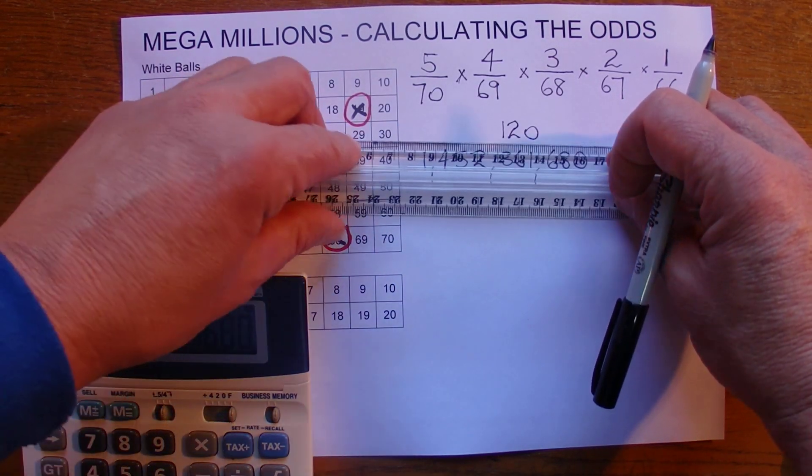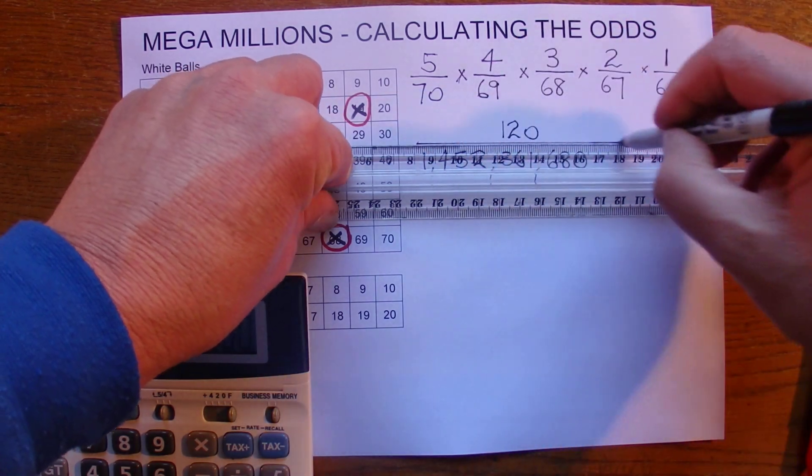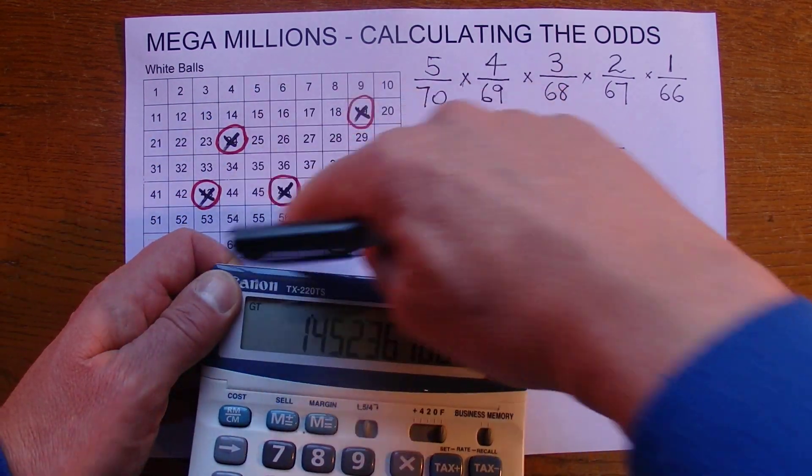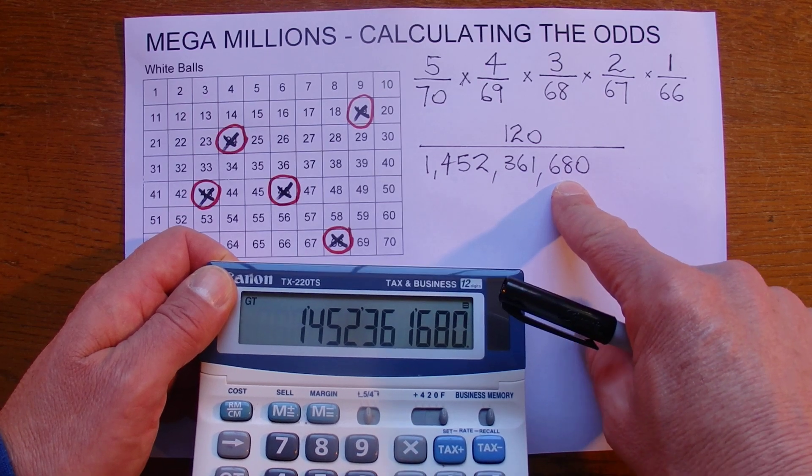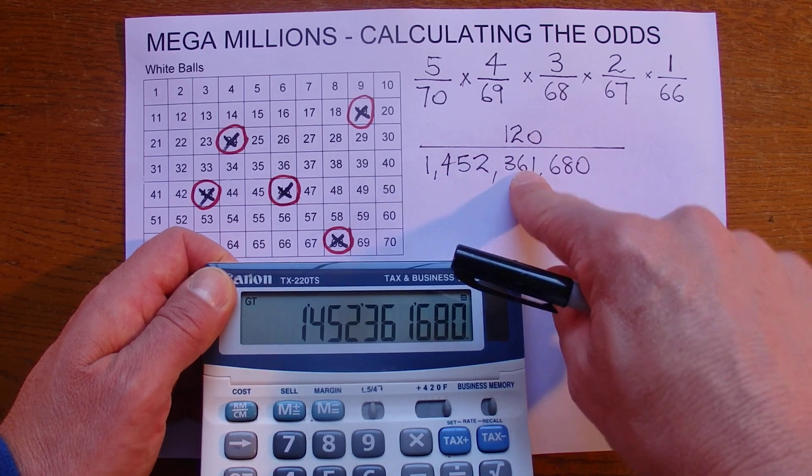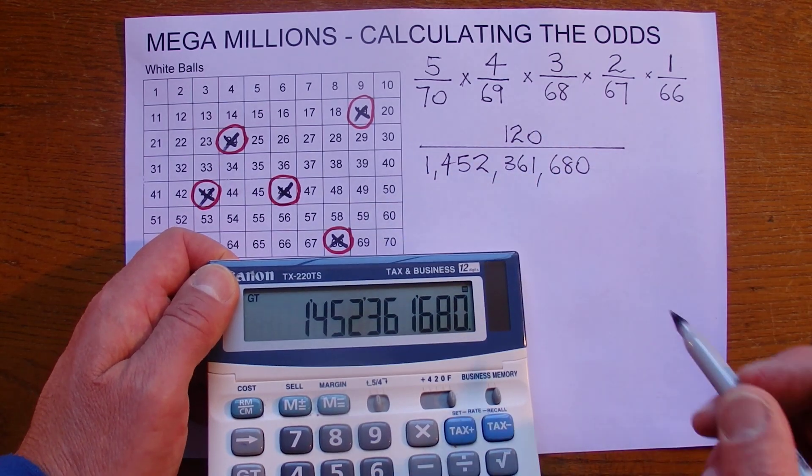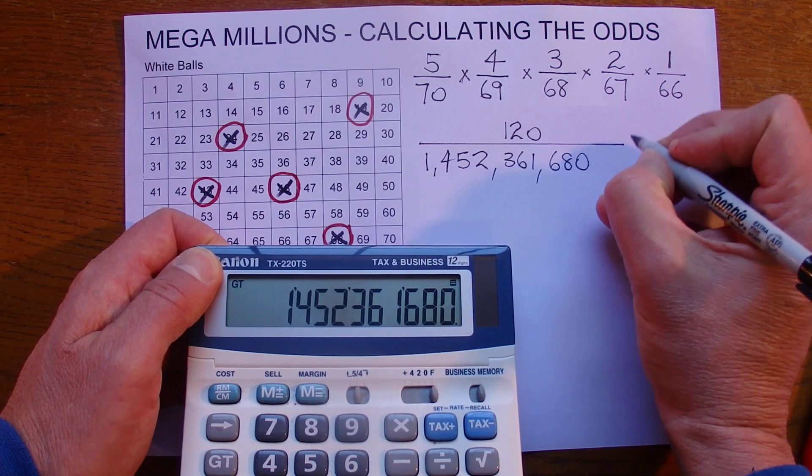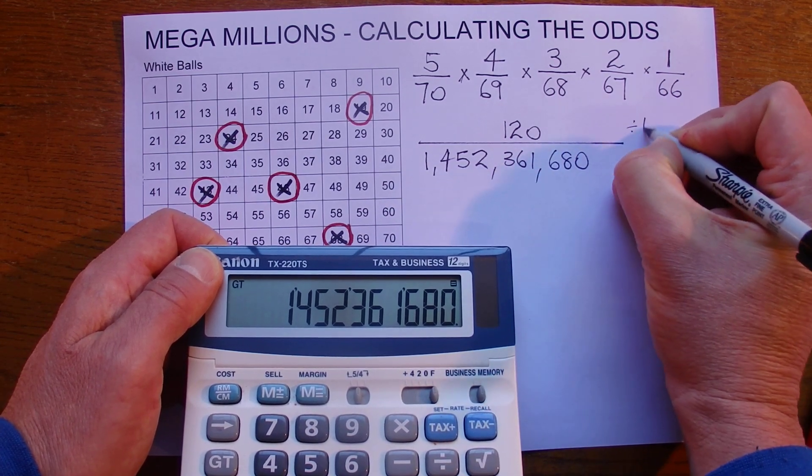So that's the odds of getting all five numbers right. That's obviously just for one game. All five numbers right in the top section, 120 out of 1.4 billion. And we're going to simplify that fraction. And if you remember back to your high school maths,